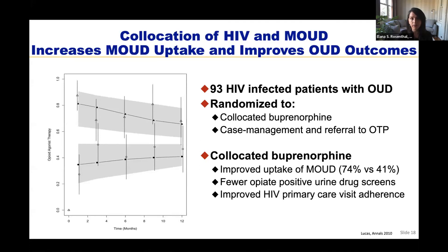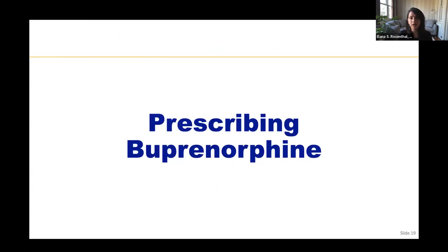We can see that not only engaging in MOUD but co-location of HIV and opioid use disorder treatment can further confer benefits. In a study of 93 HIV-infected patients with opioid use disorder randomized to co-located buprenorphine with HIV care versus HIV care at one site with referral to an opioid treatment program, the co-located buprenorphine arm had improved uptake of MOUD, fewer opiate positive urine drug screens, and improved HIV primary care visit adherence. These data reinforce that we as HIV providers should be prescribing MOUD as part of comprehensive HIV care.